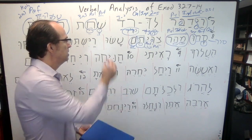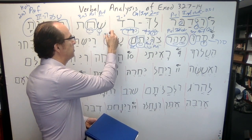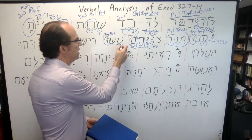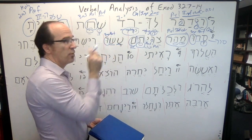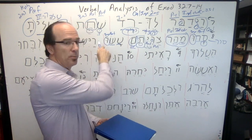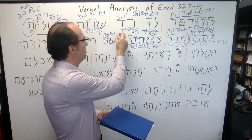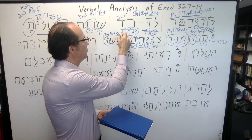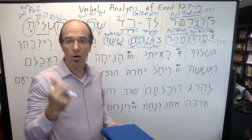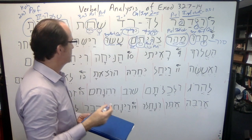Next, asu. Notice the ending — this is a 3MP perfect. Hopefully you recognize the root: it's third-hey, the final hey elides when you put a vowel on it. So this is a perfect Qal from asah — 'to do.' They have done. The Qal is fientive, and the perfect is just completed action again.